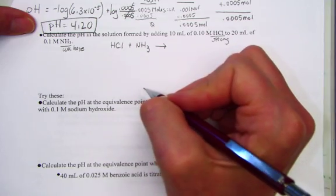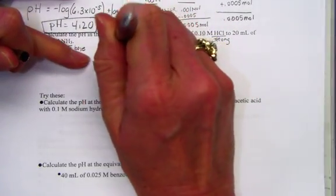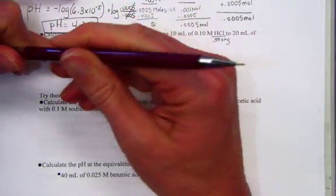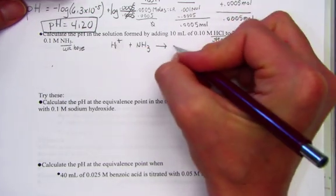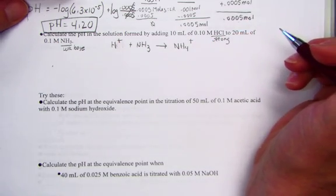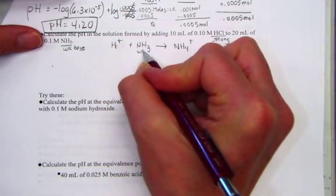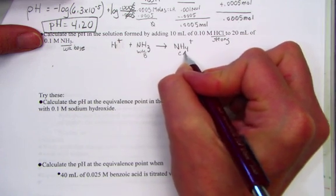Thinking of chloride really as simply the spectator ion, it might be helpful to write strong acid as H+ with weak base as NH3, and we can see the conjugate forming as NH4+. So here's the weak base and its conjugate acid setting up the buffered system.